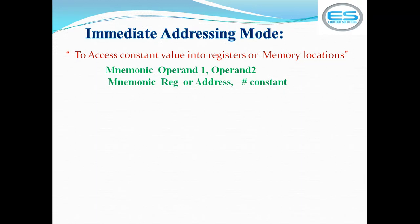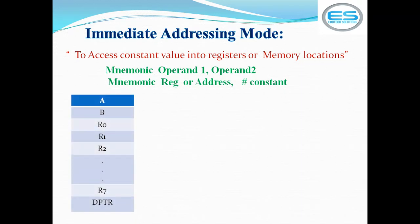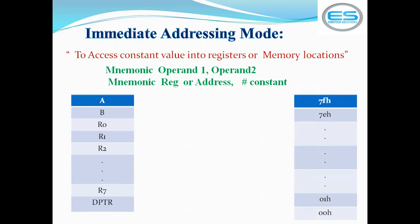Generally, assembly language follows a mnemonic followed by operands. As operands you can choose registers, memory locations, and constant values. If you find a constant value as part of your instruction, it comes under immediate addressing mode. The constant value is always placed on the source side, and the other operand is the destination — which may be a register or address. For example: MOV A, #45H — this instruction saves the constant value 45H into the accumulator.